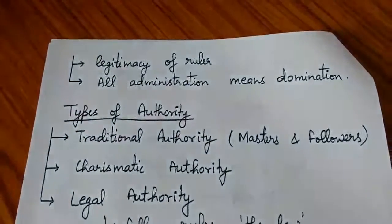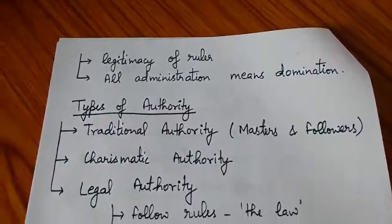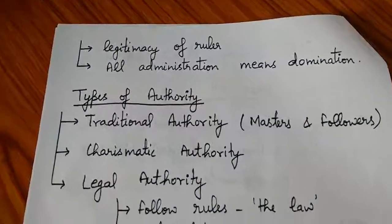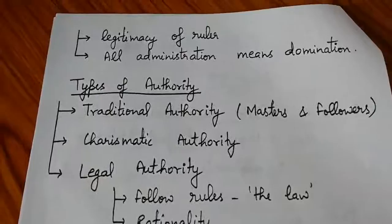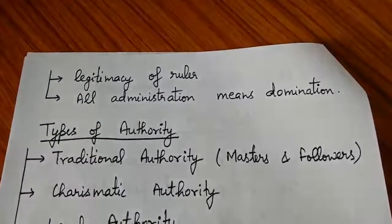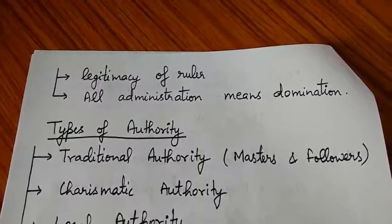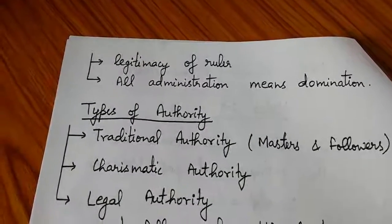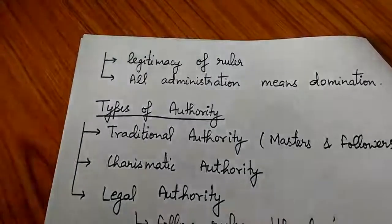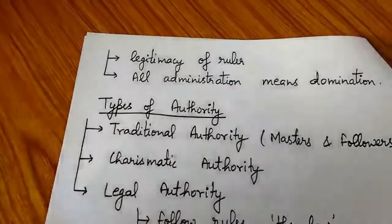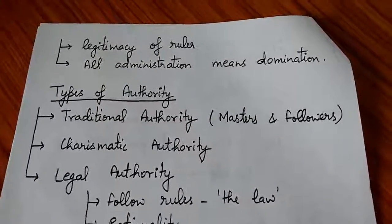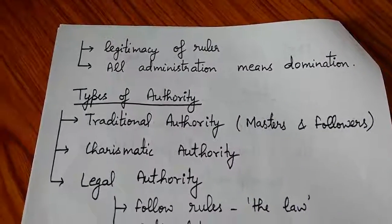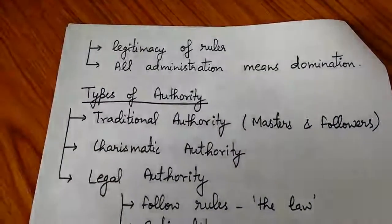Legitimacy of the ruler is decided according to the types of authority. Weber's thinking was that all administration means domination. Post-Weberian developments later showed that administration does not mean domination but cooperation. However, during Weber's era, domination was considered the primary form of administration.